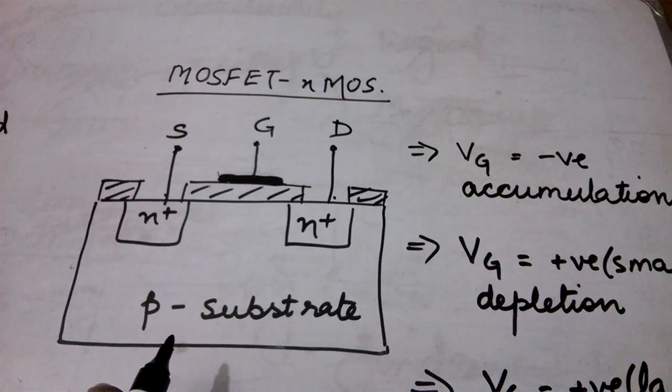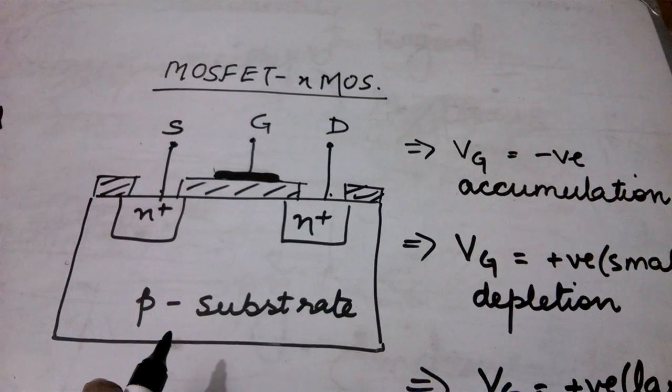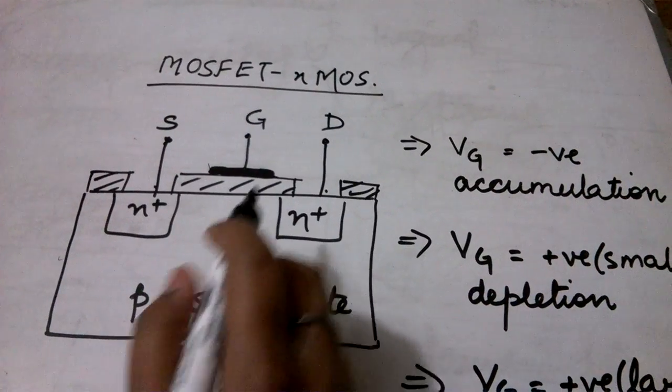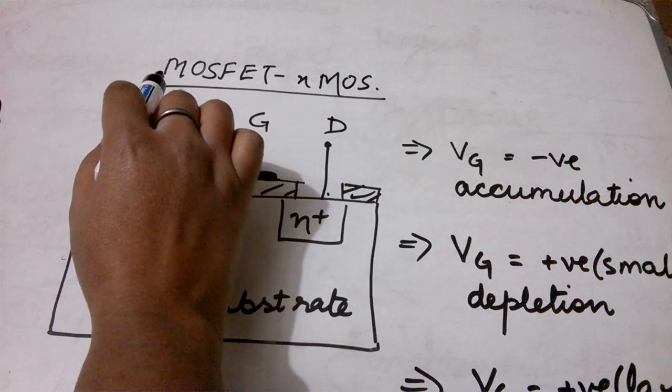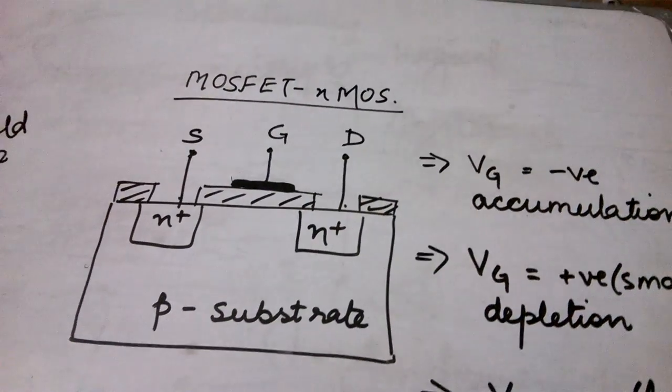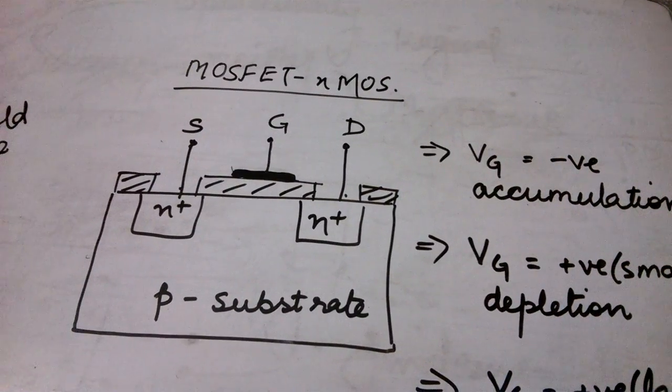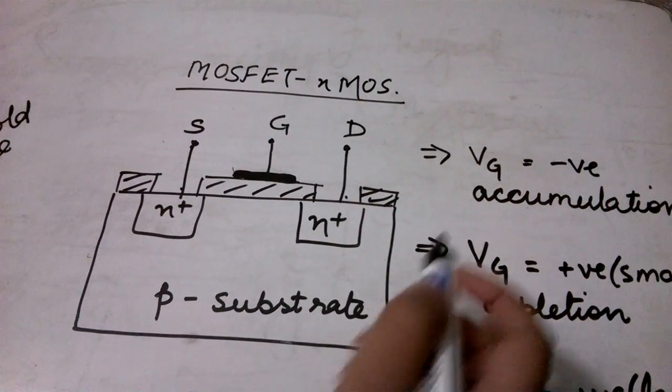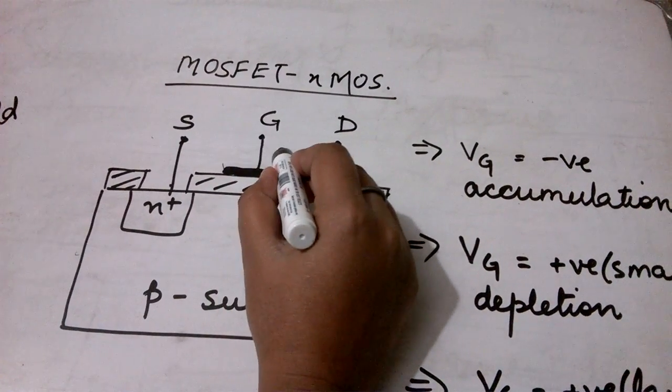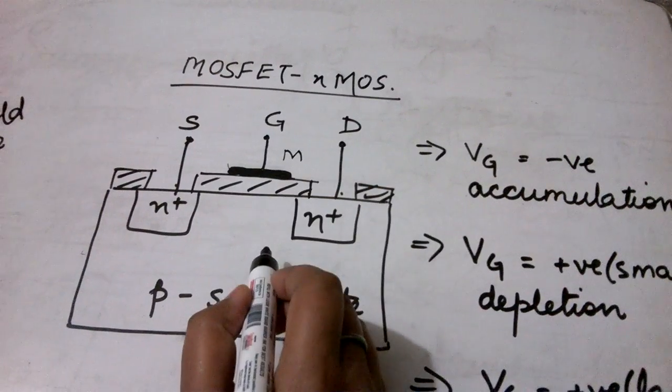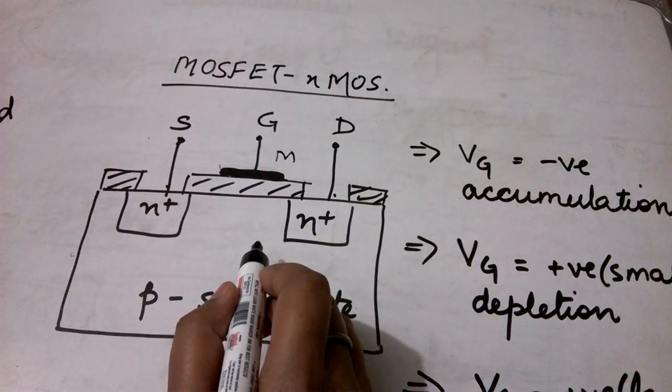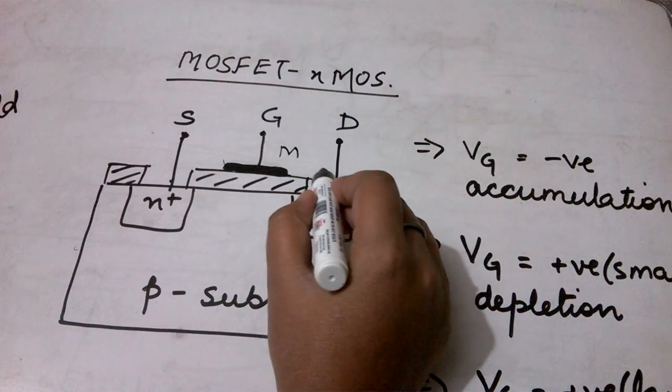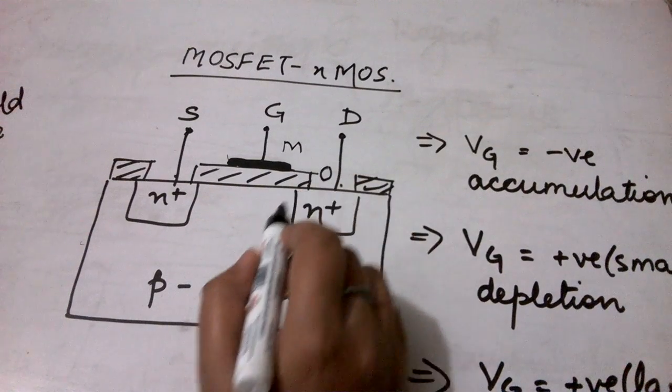N-type material has a majority of electrons as the carriers. Now the name suggests M is metal oxide and semiconductor. Now where is this MOS found in this structure? This gate part is the metal part which is mostly made up of aluminum. This is our silicon dioxide so it is an oxide layer.